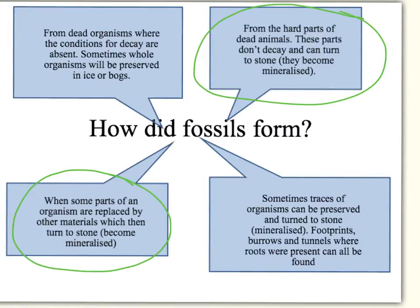It's very difficult when you look at a fossil to tell which of these two it really is — whether it was the hard parts that turned to stone or whether some parts got replaced by materials that then turned to stone. You can't really tell the difference by looking at a fossil, but these are hard parts that have turned to stone.